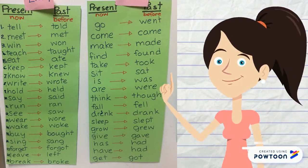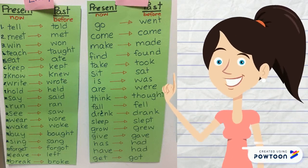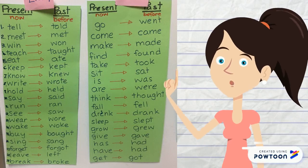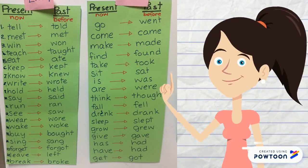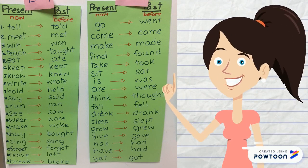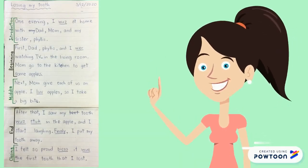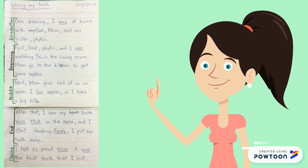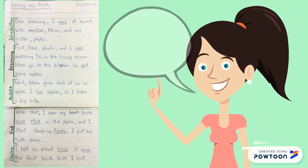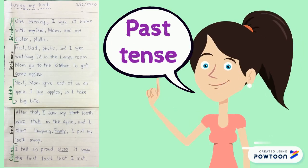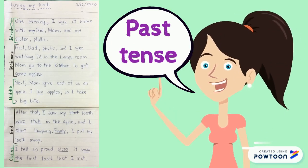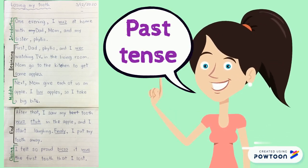There are many past tense rule breakers and they don't follow any rules, so you just have to remember them. Since your personal narrative is a story about something that has happened to you in the past, you need to write it in past tense. So today we are going to check your writing and change it to past tense.